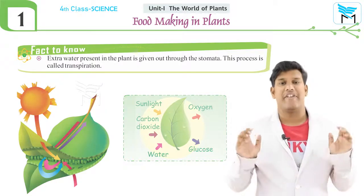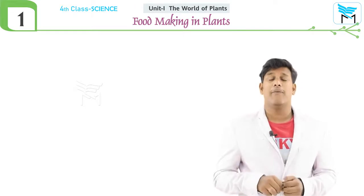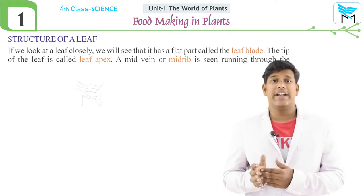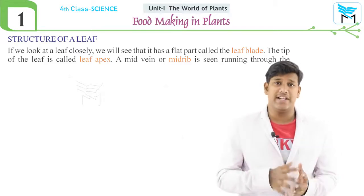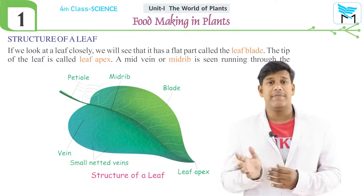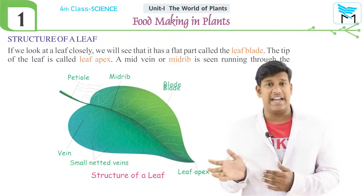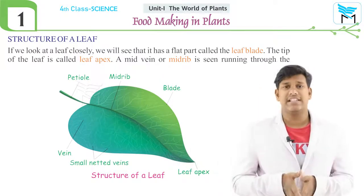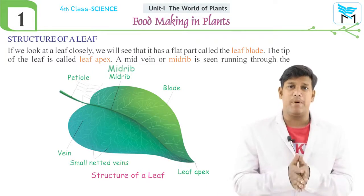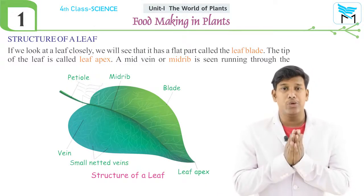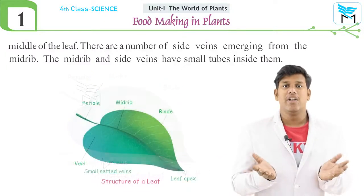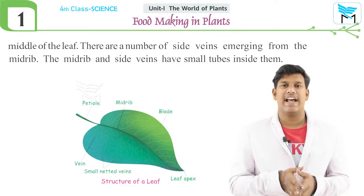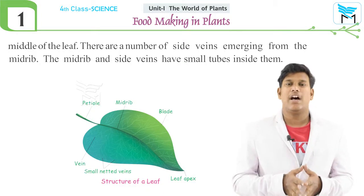Now let us see the structure of a leaf. If you observe the leaf carefully, you will observe different parts. The flat portion of the leaf is known as the leaf blade. The tip of the leaf is known as the leaf apex. At the center there is a midrib which travels and divides the leaf into two parts, and within the midrib there are lateral structures known as leaf veins.